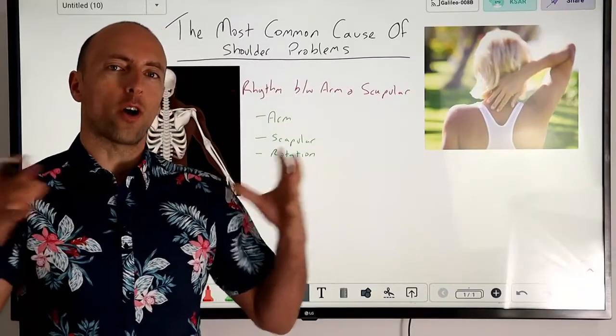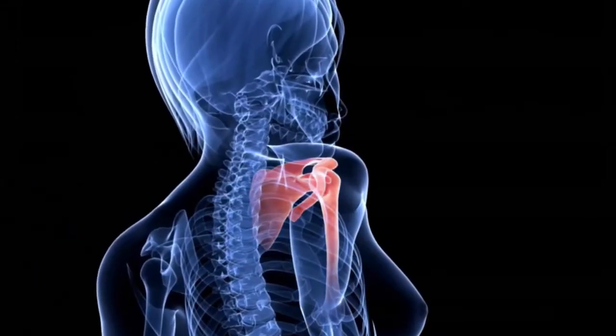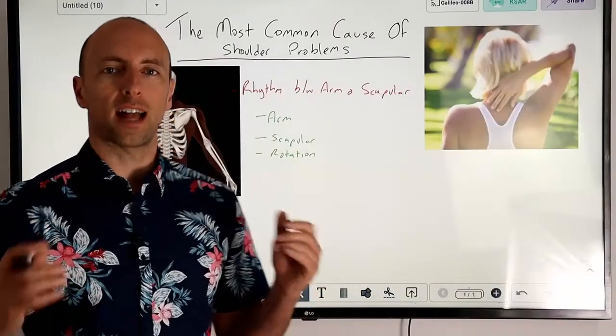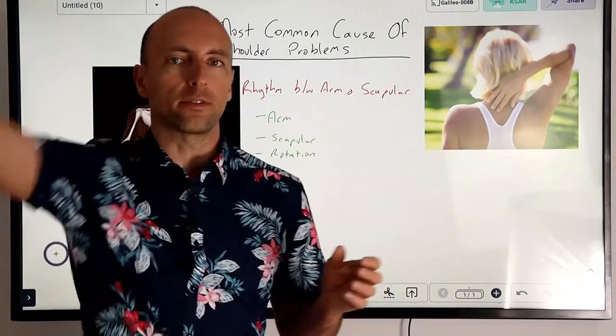When we look at the shoulder as a complex, it's not a single individual structure and it's not a single joint. The main reason for that is it's very hard to get 180 degrees of movement in every direction.